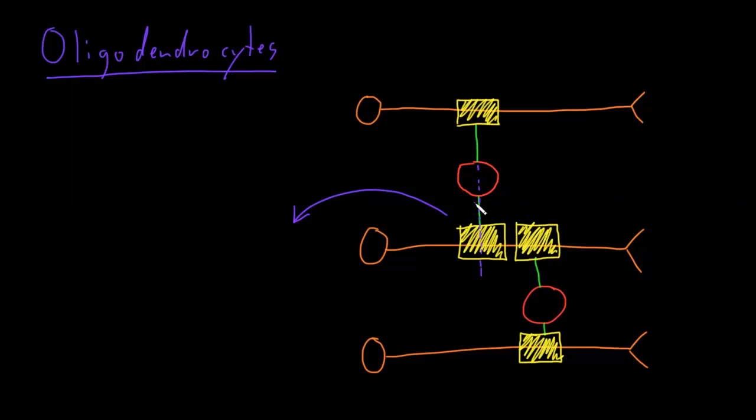So here I'll draw the axon, and we've cut it, so we're looking at it end on, so we're looking down the tube of the axon.